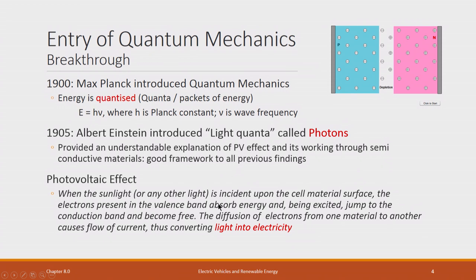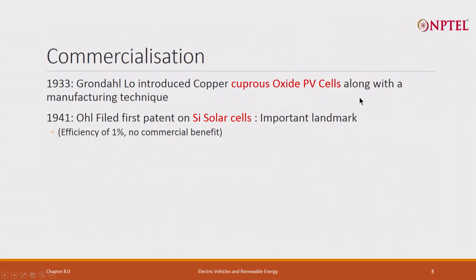When sunlight or any other light is incident upon the cell material surface, the electrons present in the valence band absorb energy, become excited, jump to the conduction band, and become free to travel. The diffusion of these electrons from one material to another causes a flow of current, thus converting light into electricity. This is the photovoltaic effect.